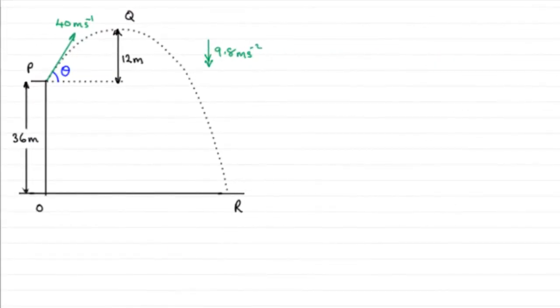Now before we start, what I've done is just sketched out what we're given here. This ball is projected at 40 meters per second at an angle theta to the horizontal from this point P. At Q, this is the maximum height, 12 meters above P, and P is 36 meters above this ground here.